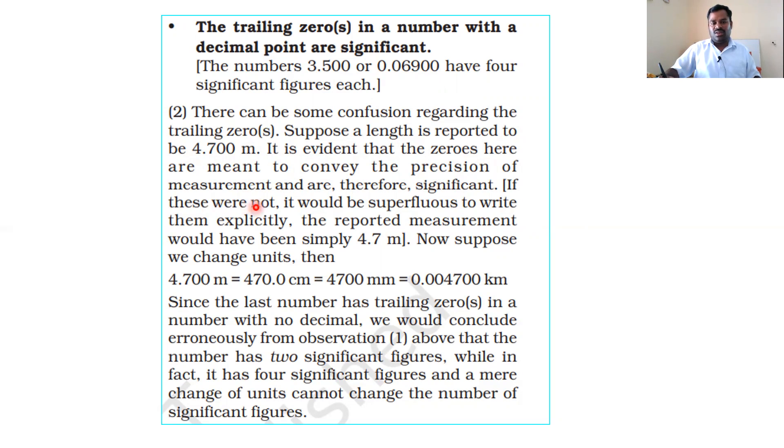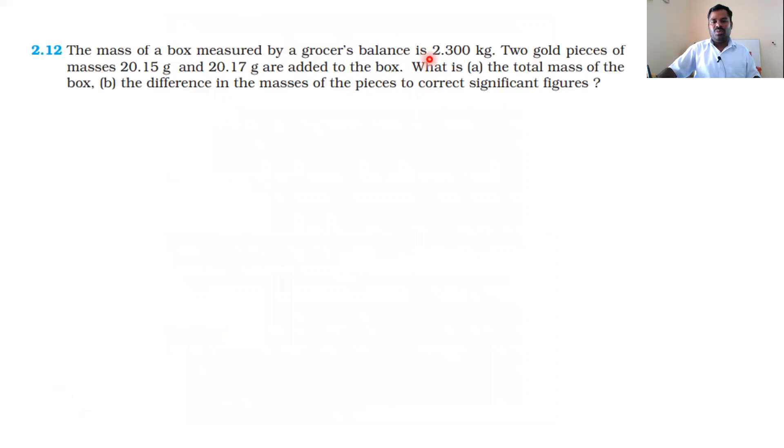So 2.300 is the mass of the box. The mass of the box is 2.3 kilograms, but 2.300 kilograms means the decimal point is significant.